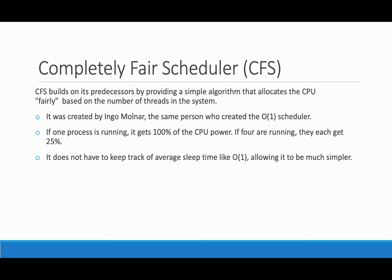The O1 scheduler was replaced by the Completely Fair Scheduler. The person who made the CFS was actually the same person who made the O1 scheduler, Ingo Molnar. The idea behind it is that if one process is running, it gets 100% of the CPU's power. If four processes are running, for example, they would each get 25%. It basically gives all processes an equal amount of CPU, and it does not keep track of average sleep time like the O1, allowing it to be much simpler, better, and just as fast.